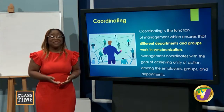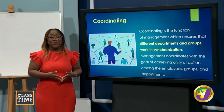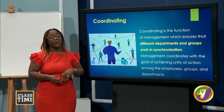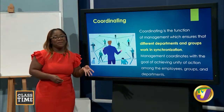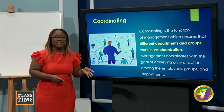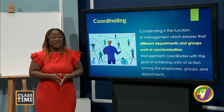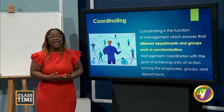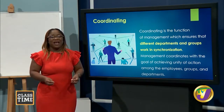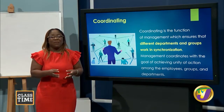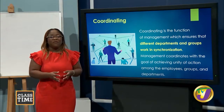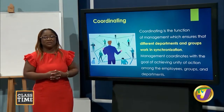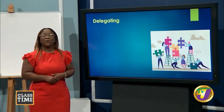Here's an example of coordinating using the school setting: the principal may encourage the information technology department to work with the science department — perhaps with a physics teacher — to accomplish a task, like a robotics project or program. That is coordinating: ensuring that there is some correlation and working together of different teams within the organization.